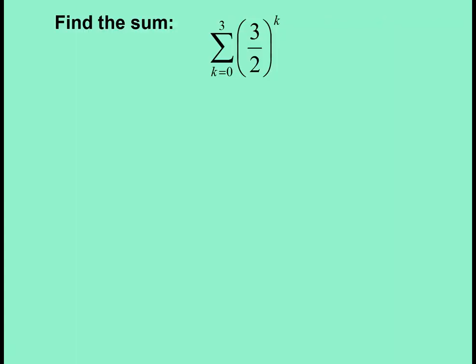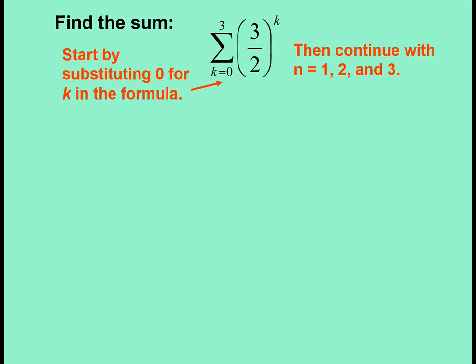So let's find the sum in this one. Notice this one is k equals 0 to 3 of 3 halves to the k power. So we start by substituting 0 and then we continue by substituting k equals 1, 2, and 3.